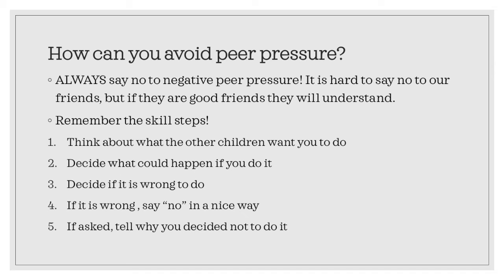Remember these skill steps. 1. Think about what the other children want you to do. 2. Decide what could happen if you do it. 3. Decide if it is wrong to do. 4. If it is wrong, say no in a nice way. 5. If asked, tell why you decided not to do it.